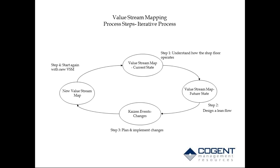Going from the current state to the future state is not something you do all at once. You're going to make relatively short, small changes — all of them will benefit you. You'll see measurable improvement with each one, but you're not going to completely change the entire shop floor in one fell swoop. You'll work toward your ultimate future state, and this iterative process can take up to two years or even longer. Every time you make a change, you're going to see improvements in the operation that you can measure.